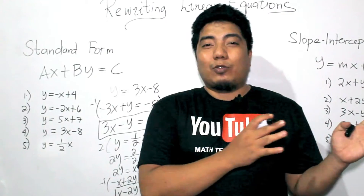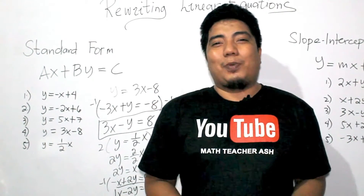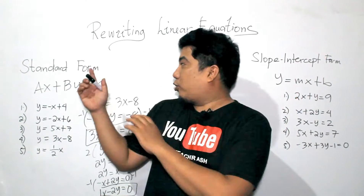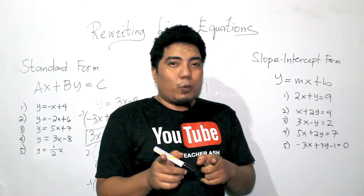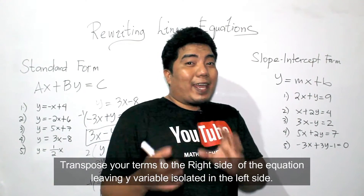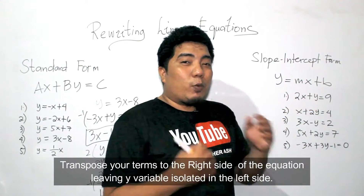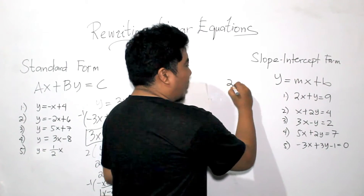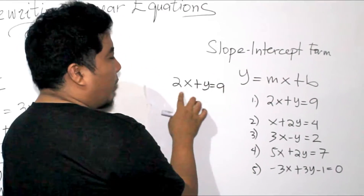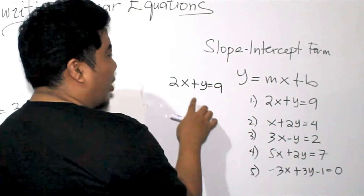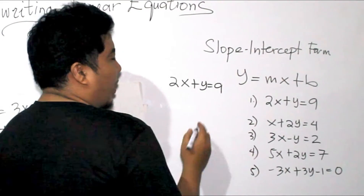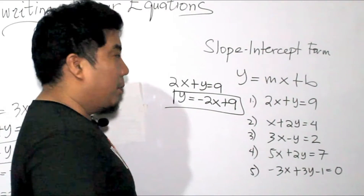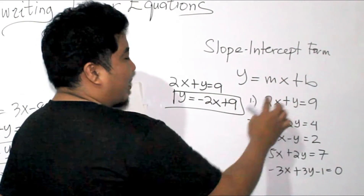Now let us go to how to change standard form to slope-intercept form. Remember that the slope-intercept form is Y is equal to MX plus B. So to convert from AX plus BY is equal to C, you transpose all X terms to the right side of the equation, writing the X term first. For example number one, 2X plus Y is equal to 9: we transpose 2X to the other side, giving us Y is equal to negative 2X plus 9. That is the final answer.